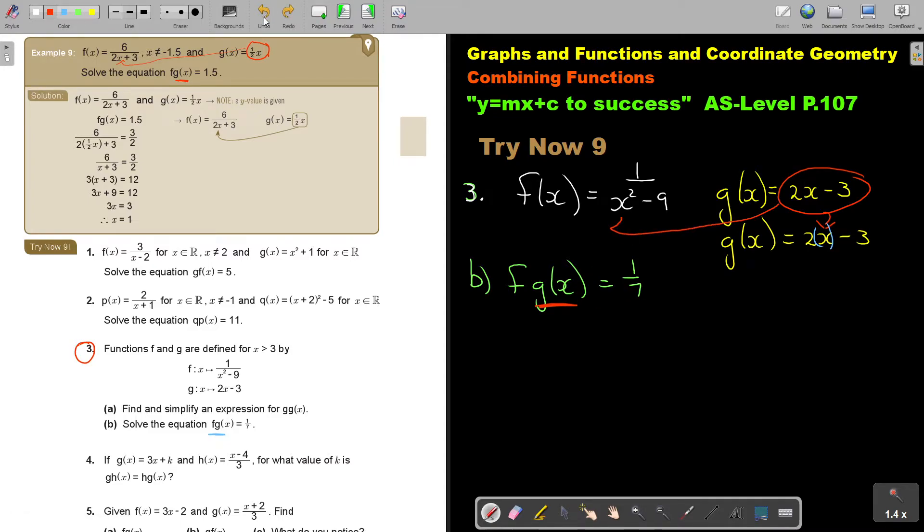Let's rewrite it. So that is going to give me 1 over, and now I'm going to say 2x minus 3, and don't forget your square, minus 9. And that is equal to 1 over 7.